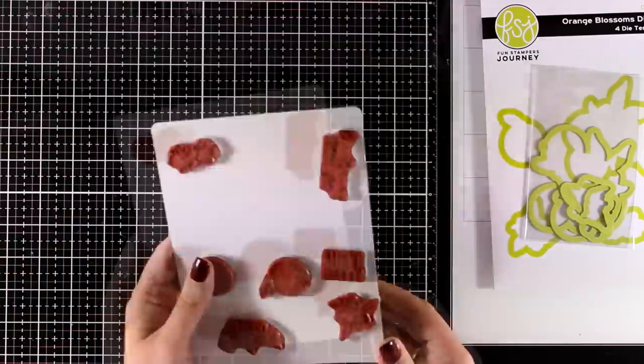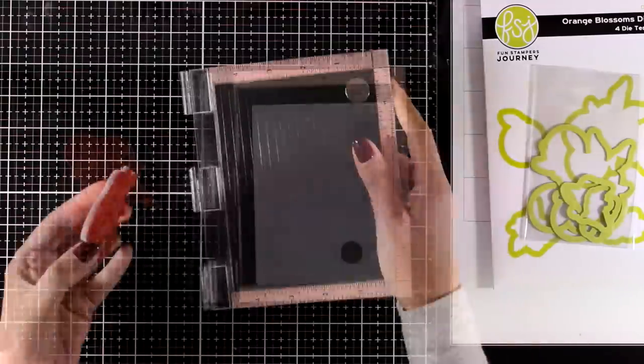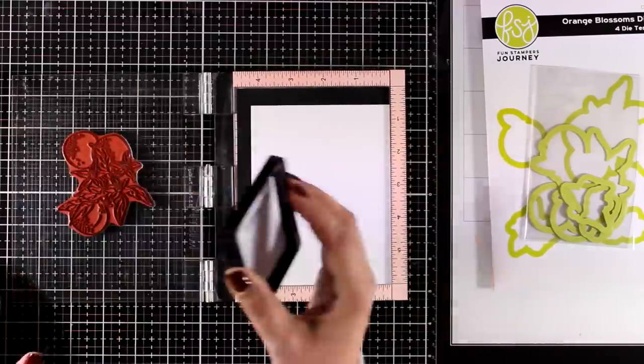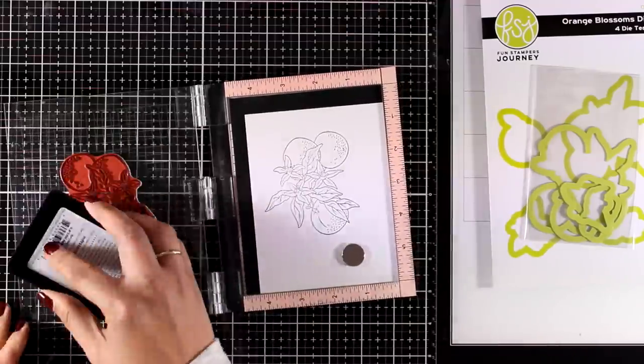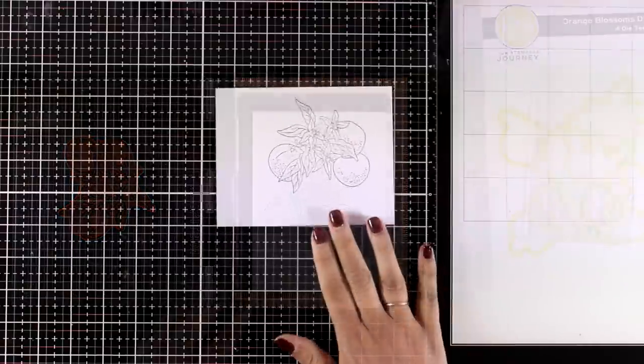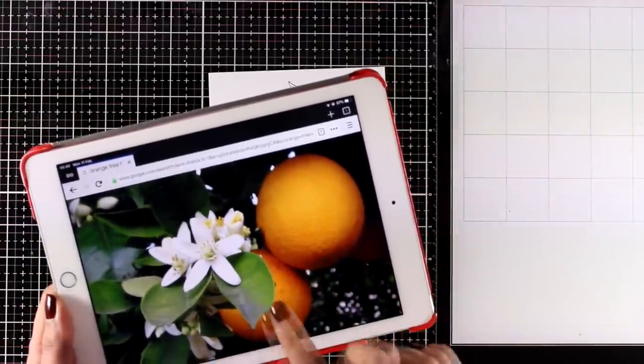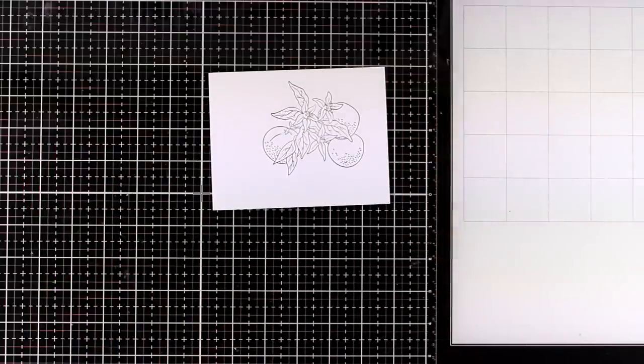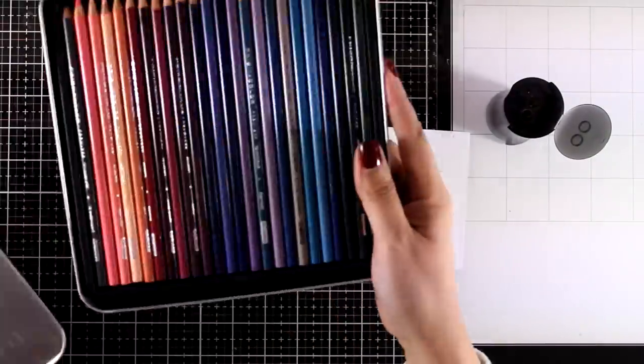For today's card, I'm going to use the biggest of the stamps that features both the flowers and the oranges. I'm using my stamping platform and black ink. I'm going to stamp it a couple of times to get a nice crisp image. You can always go online and check out how the flowers look and get an idea of what colors you want to use for coloring. It's something I always like to do if I want a realistic look.